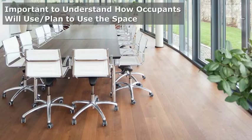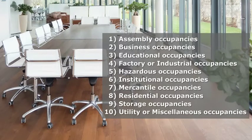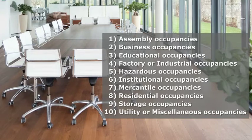Both assembly and business requirements may need to be considered so that the design will address the most stringent code requirements. The ICC codes and the NFPA codes divide the occupancy classifications slightly differently. However, the ten most common occupancy classifications used throughout the various building and life safety codes are listed here. Some of them also have sub-classifications, which will be discussed in the first part of this course.